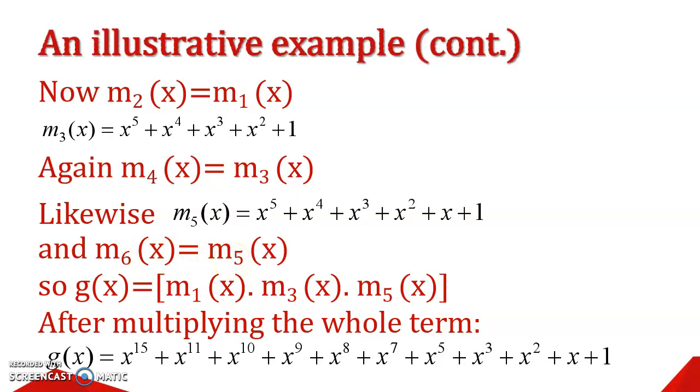Again, m6(x) equals m5(x). So, as g(x) equals LCM of all the minimal polynomials, we have to consider only m1(x), m3(x) and m5(x). Other terms are redundant. After multiplying the whole term, we get g(x) equals this. So, if you multiply, you can see the polynomial is done.